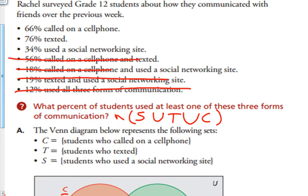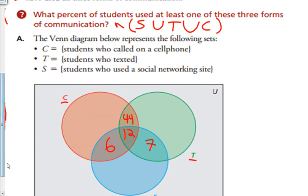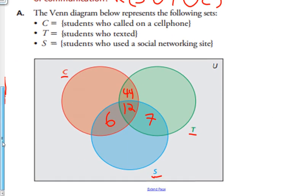Then 34% just used social networking. So in total 34% used social networking. So 34 minus 12 minus 6 minus 7 gives me 9 just used social networking.